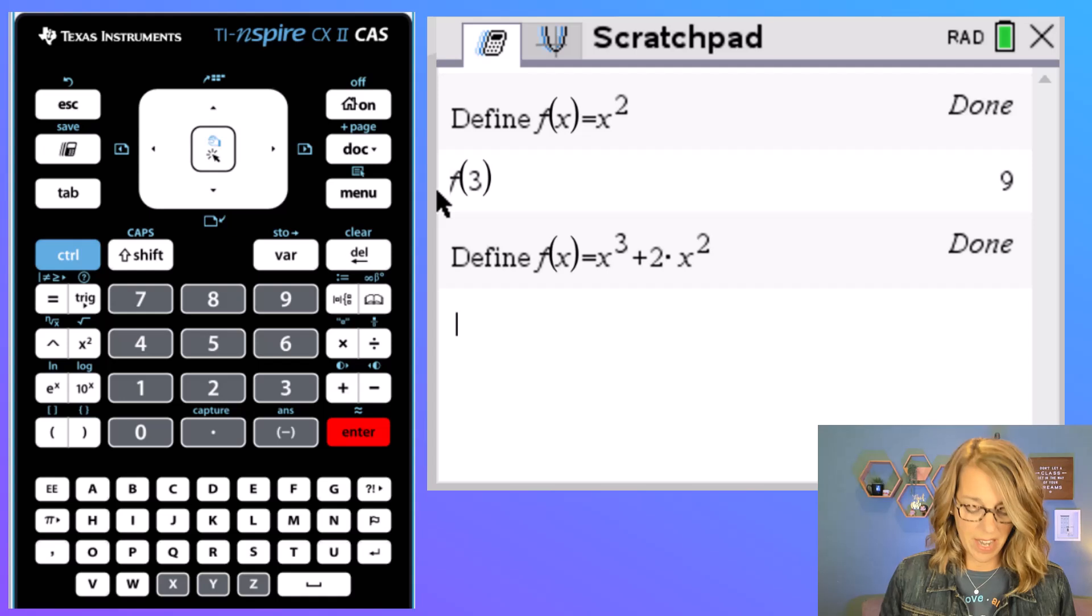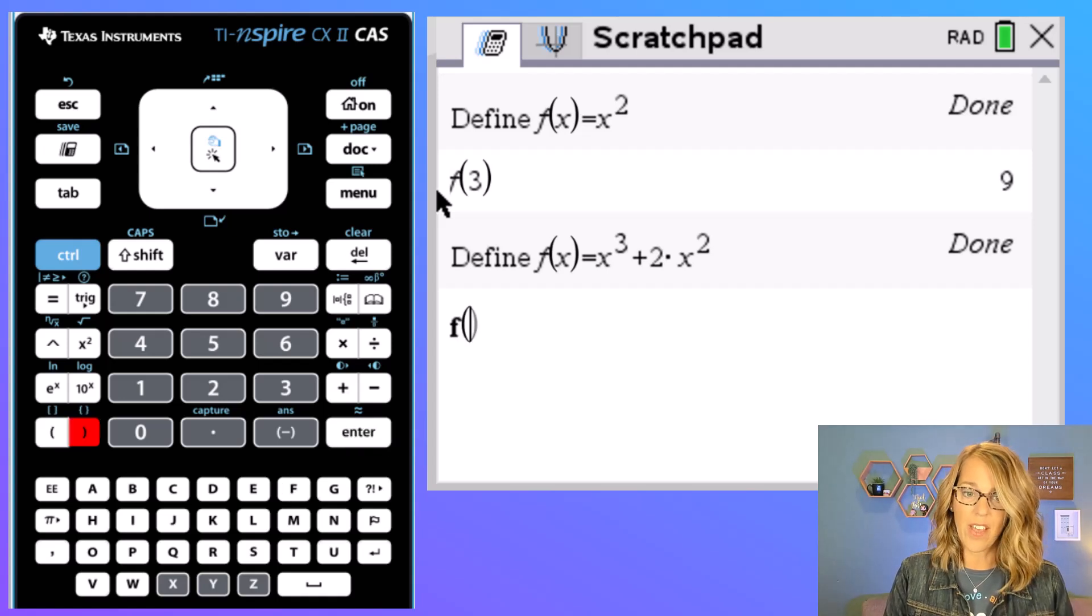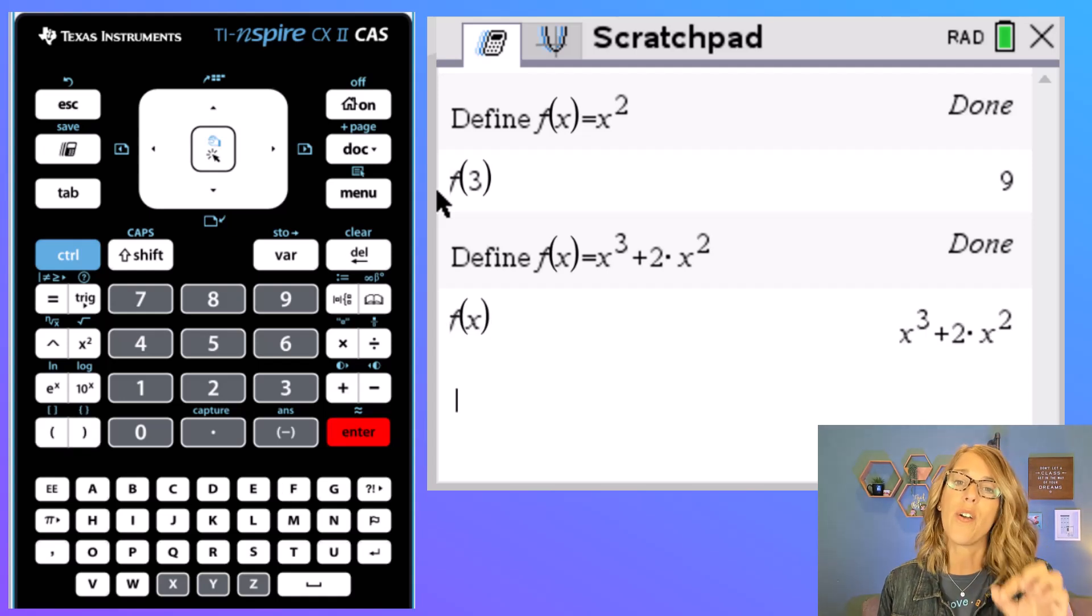Now if I just type in f of x it's going to tell me that it is written over my first definition and now f of x is this cubic.